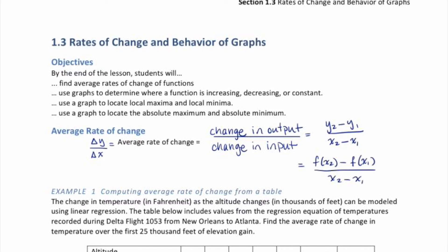This just becomes the function evaluated at X2 minus our function evaluated at X1, divided by X2 minus X1. Note that F evaluated at X1 equals Y1, so all I did was replace Y1 with F of X1. Similarly, our function evaluated at X2 gives us Y2, and that is why these are replaced here.